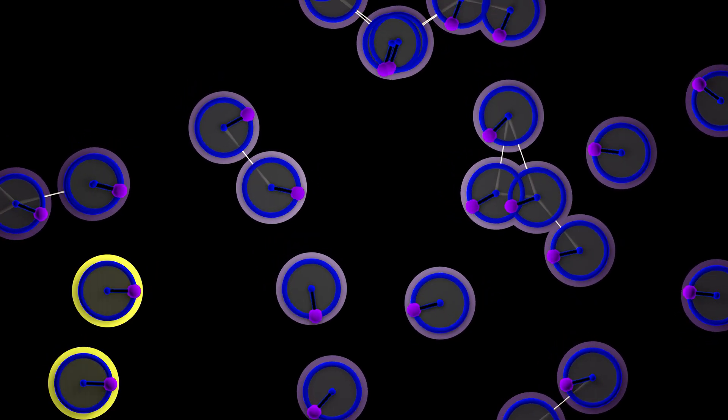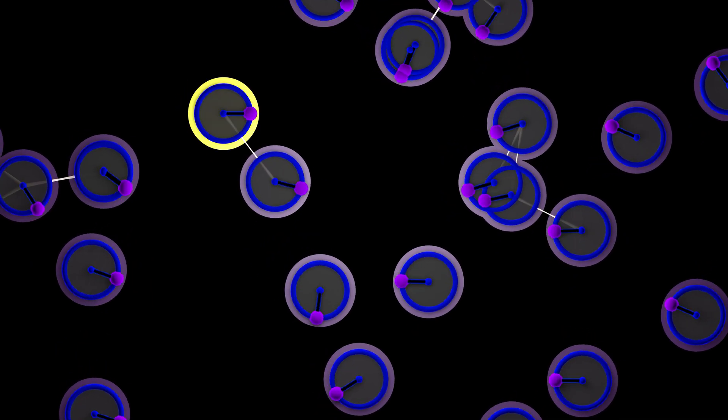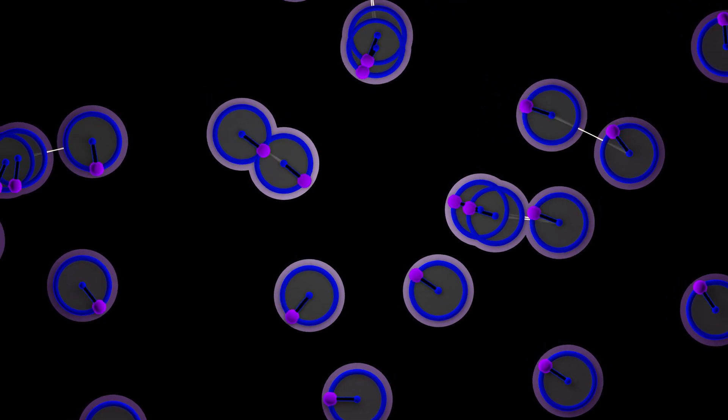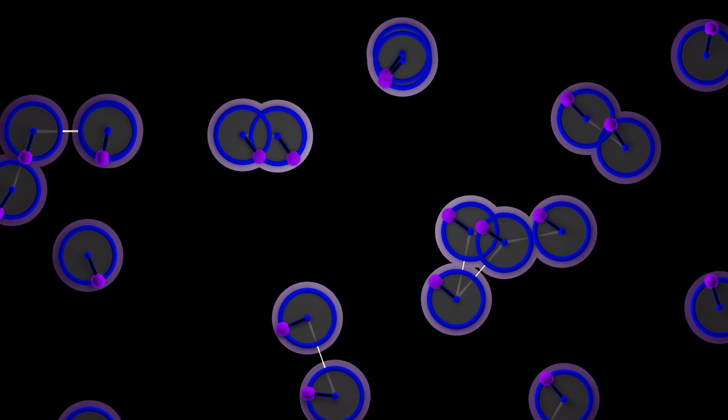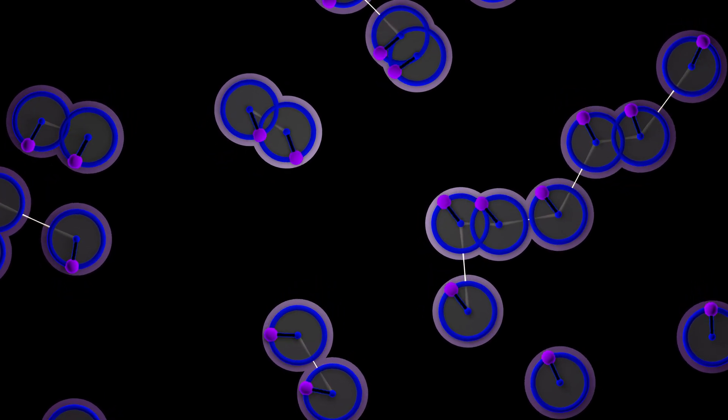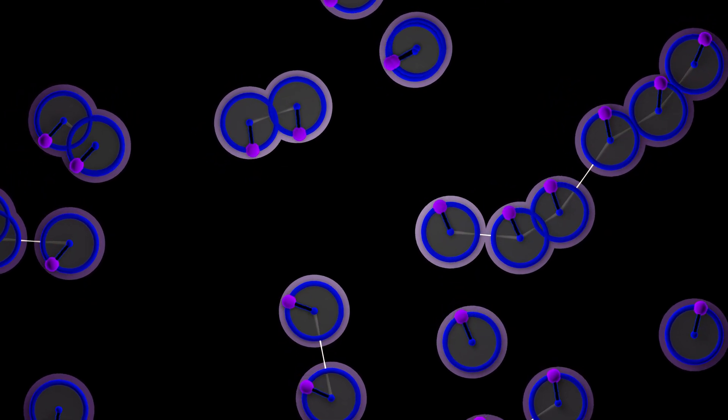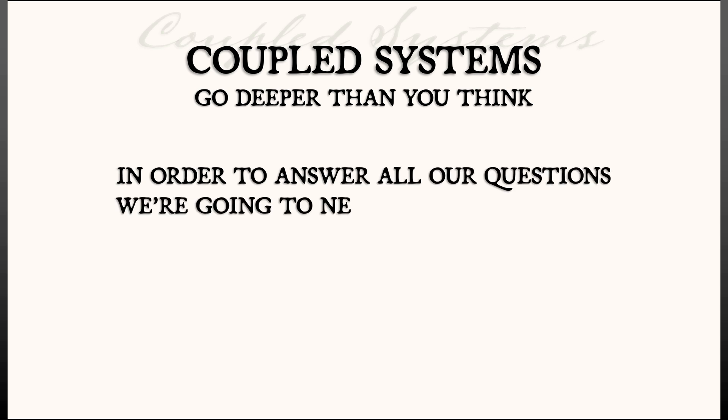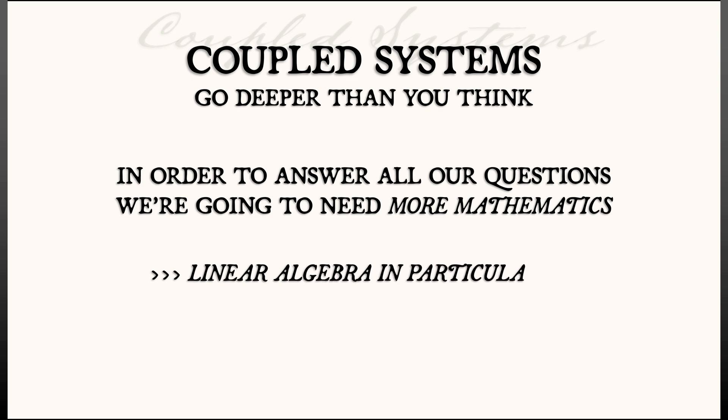Phenomena that maybe match the way that information spreads around a social network or other interesting situations as well. There is so much amazing stuff that you can ask. Coupled systems go much deeper than you might imagine. In order to answer all of the questions that we have raised here, we're going to need more mathematics. We're going to need linear algebra in particular.